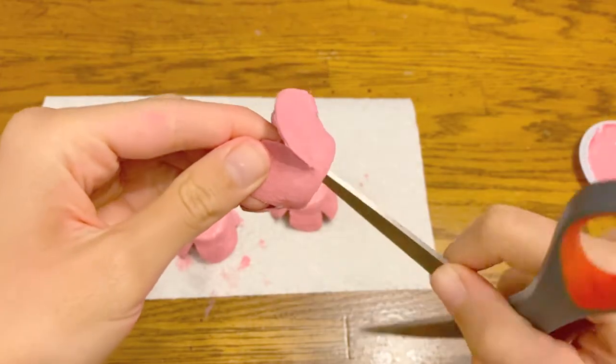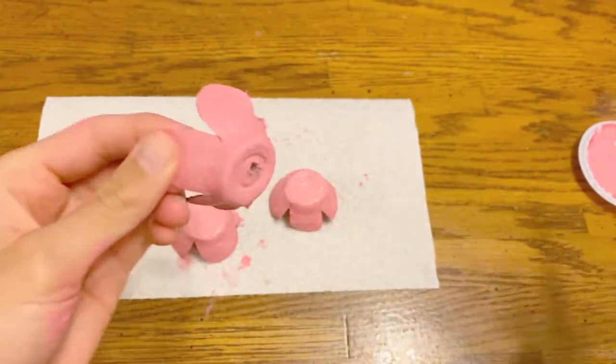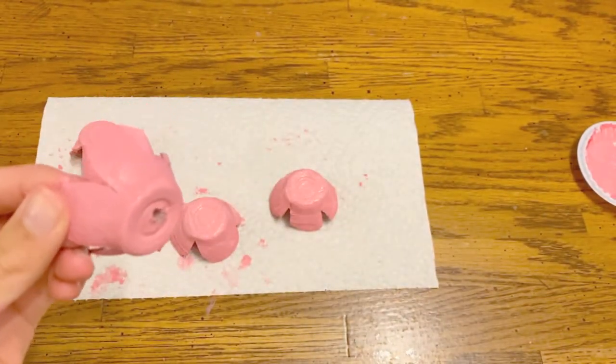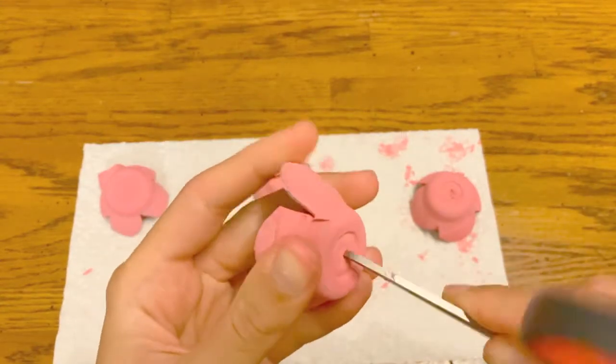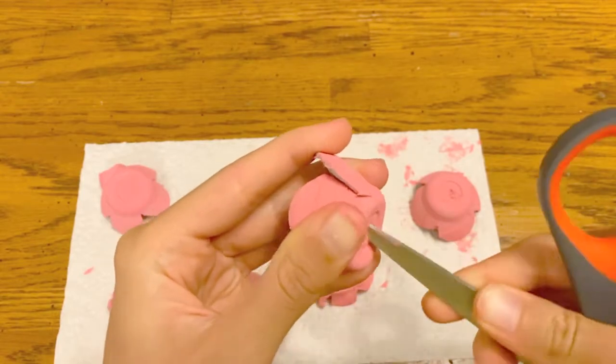Step three is to poke a hole with your scissors into the bottom of each blossom. Make sure to have an adult help with this step. A tip that I found is to very slowly twist the scissors to make the hole.